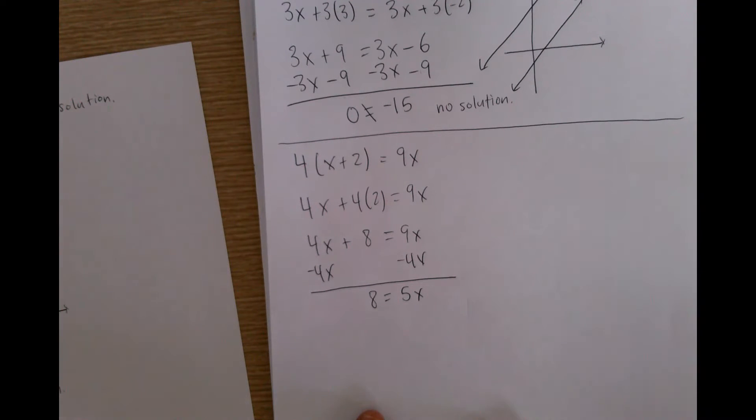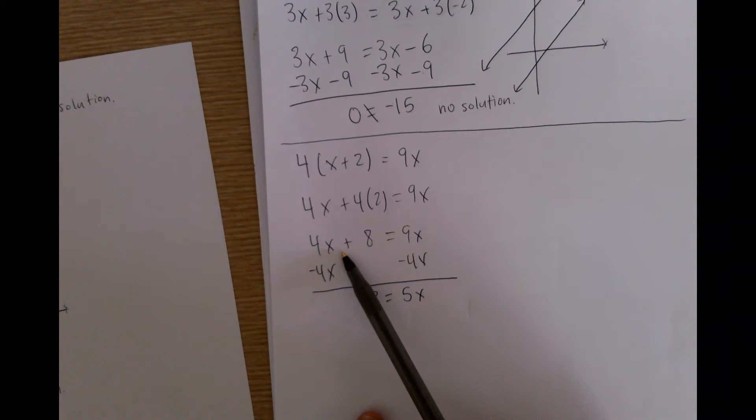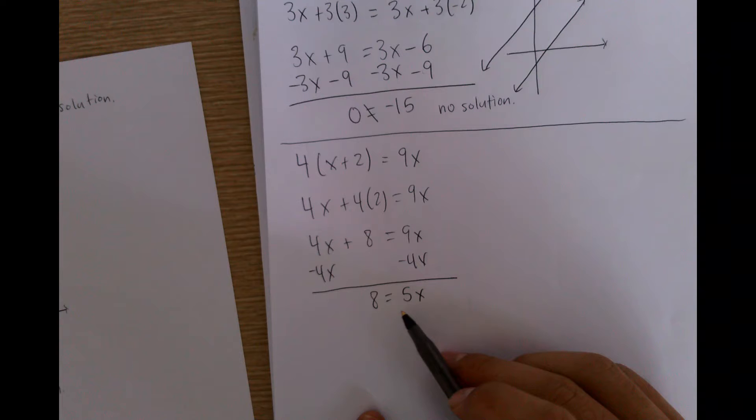So again, what I did is I moved the smaller variable to the bigger variable side, and I went ahead and subtracted 4x from both sides. You can also see that because I subtracted 4x, I didn't subtract the 4x from the 8, but I just wanted to cancel out the 4x. Okay, so you can see here that it was a positive 4x, and then I subtracted 4x on both sides. And then what I'm left with is that 8 is equal to 5x.